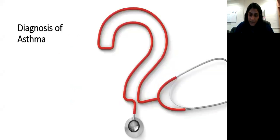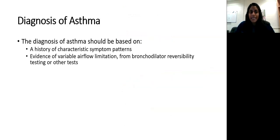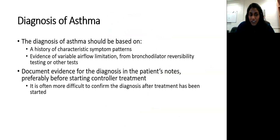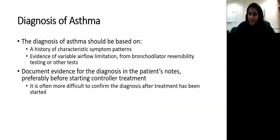I'm going to break my talk into three components: diagnosis, assessing, and management of asthma. For diagnosis, the most important first element is history. You need to have variable airflow limitation — symptoms vary over time — and that's a hallmark feature. You should also be able to confirm the diagnosis before starting a patient on controller treatment so you can adequately determine if this is truly asthma.